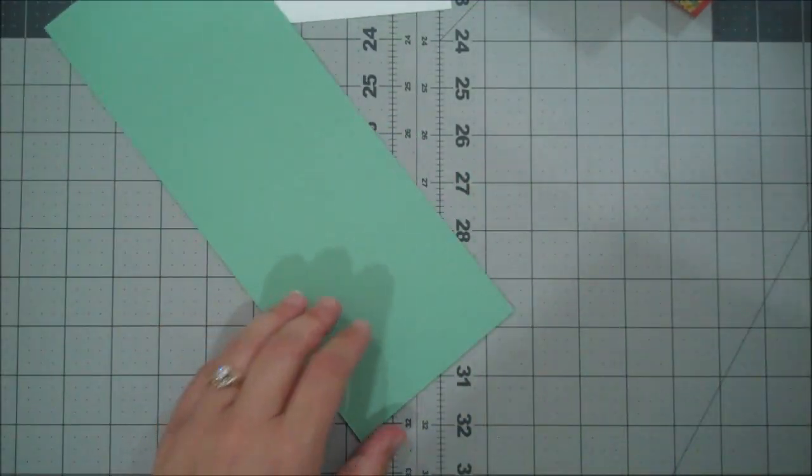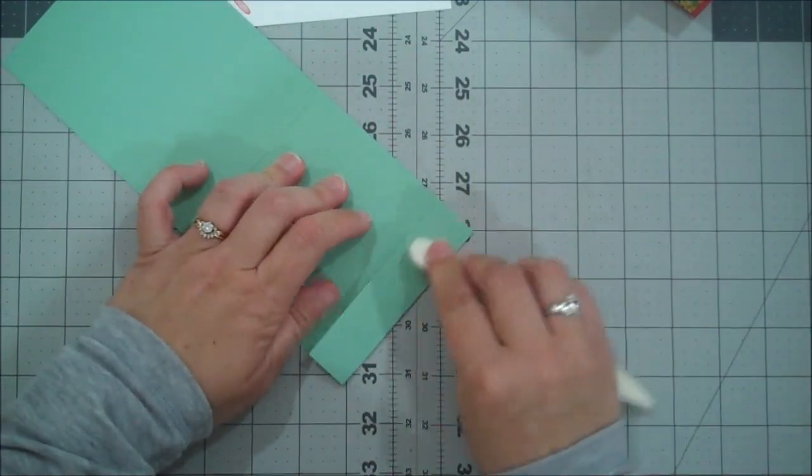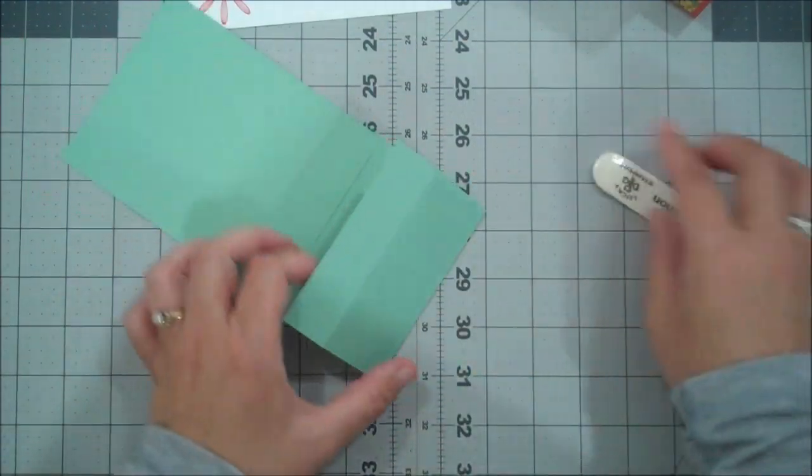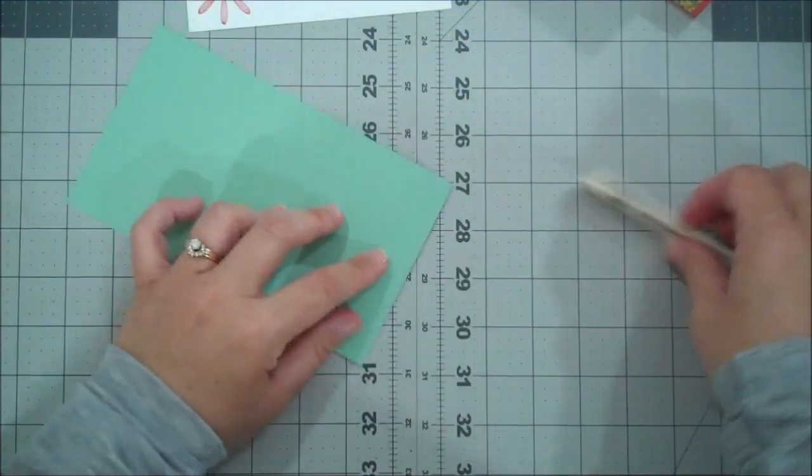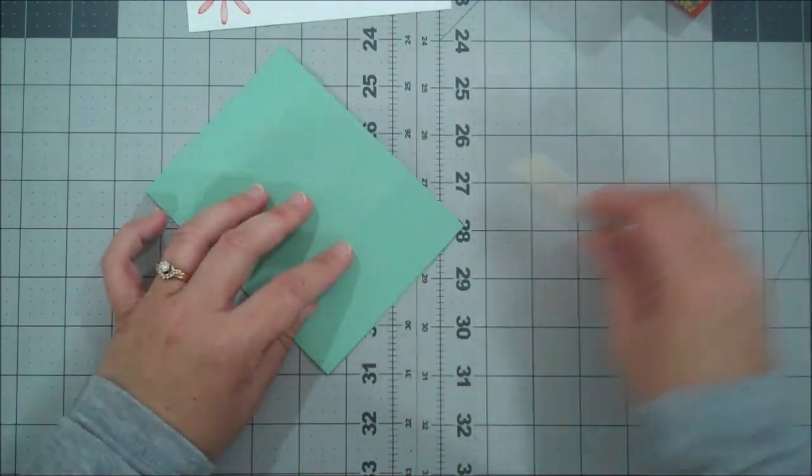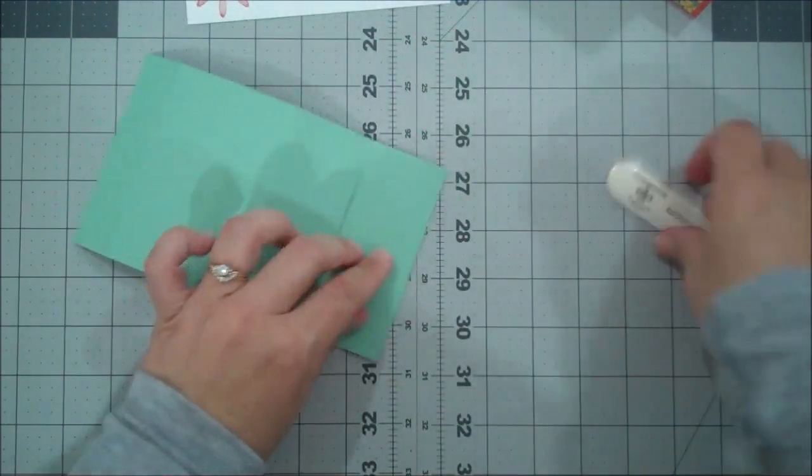now let's go ahead and do our burnishing. So let's, just be careful with that one that you've cut, because you don't want to tear it. Okay, so just be gentle with that one, let me see my other score line.